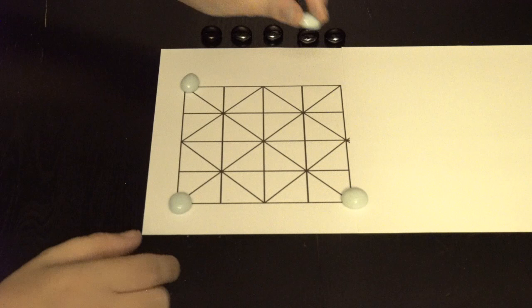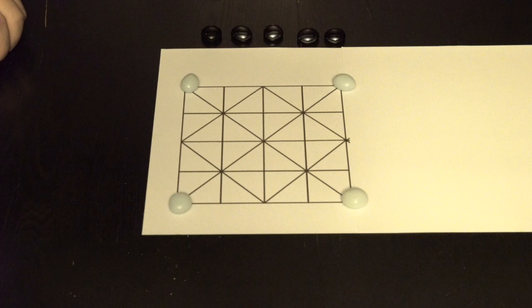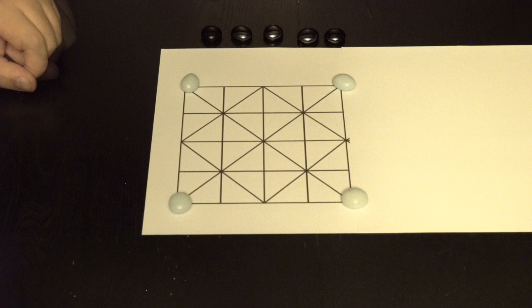The players can choose who goes first. Los jugadores deciden cómo empezar. Aquí decidimos que los perros empezarán. Here we have dogs moving first.